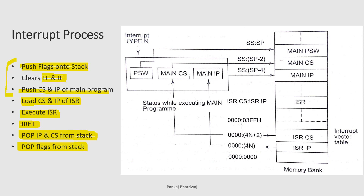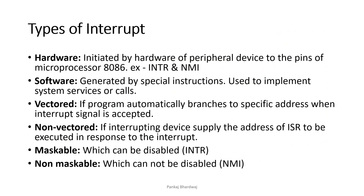Since CS and IP are each two bytes, every single value occupies two different memory locations. The stack pointer is decremented by two when pushing each value. In this case the stack pointer is decremented by four — first two bytes for CS and then two bytes for IP. Similarly, while popping, the stack pointer is incremented by two for each value popped from the stack.